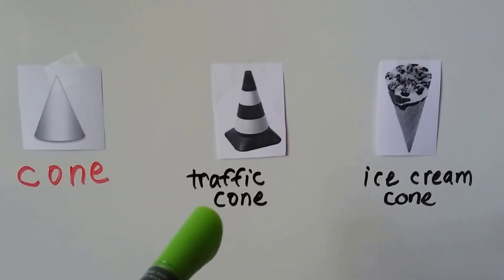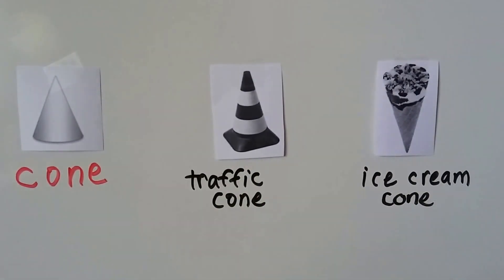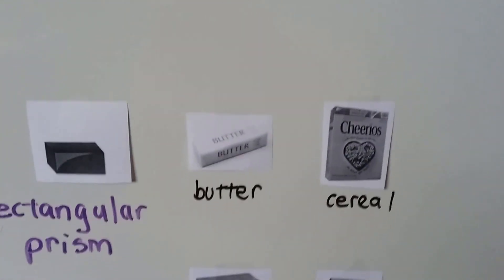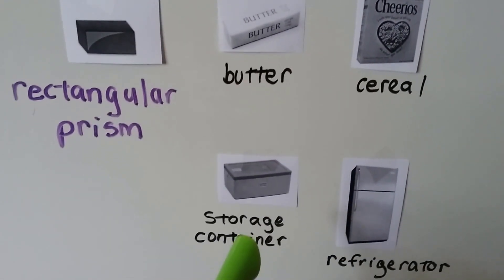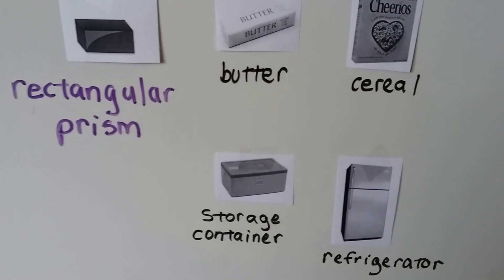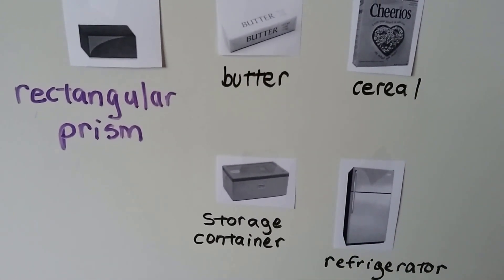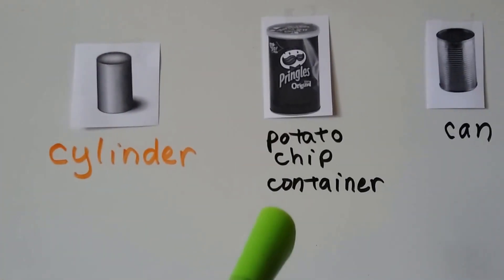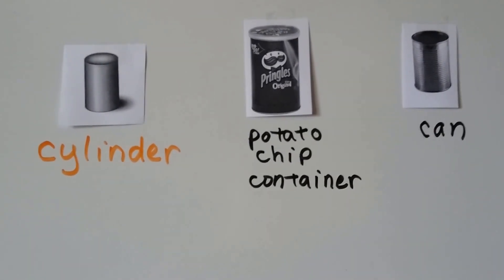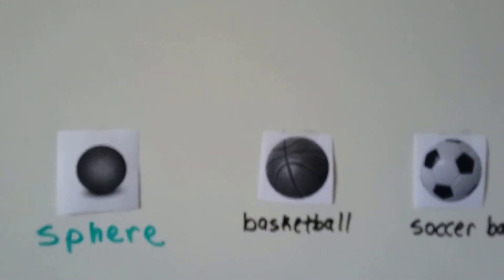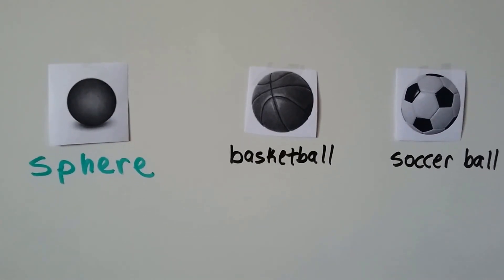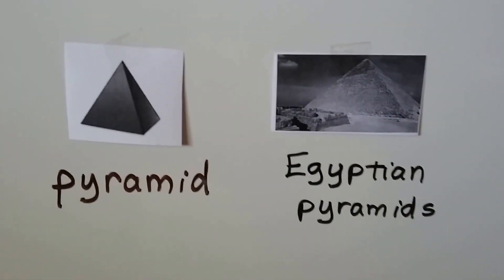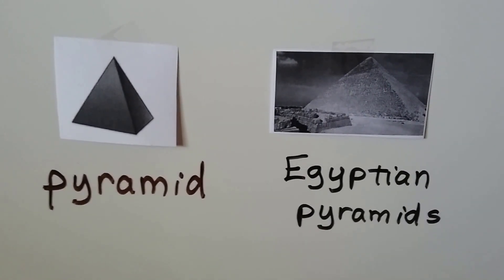For a cone, we could have a traffic cone or an ice cream cone. For a rectangular prism, it could be a stick of butter, a box of cereal, a storage container, or even a refrigerator — they're all shaped like rectangles. A cylinder could be a potato chip container or a tin can. A sphere could be a basketball, soccer ball, or bowling ball. And the pyramid is like the great pyramids of Giza.